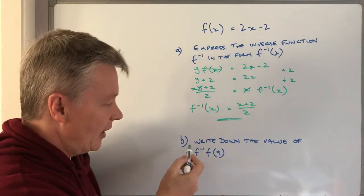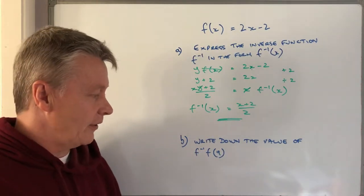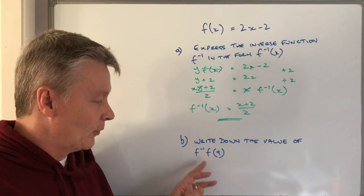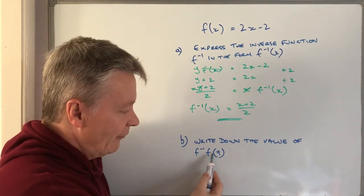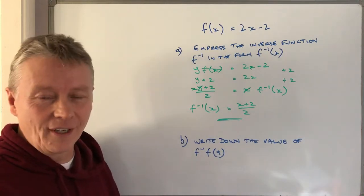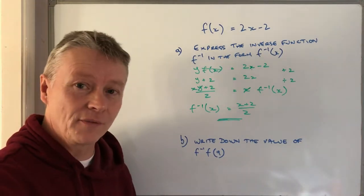Now finally sometimes with these you'll get something like this and it says write down the value of f⁻¹(f(9)). So what we're doing is this is a function of 9 so it could be double 9 or it could be half of 9 or something, it's just a function.